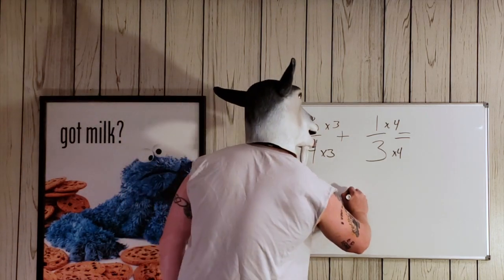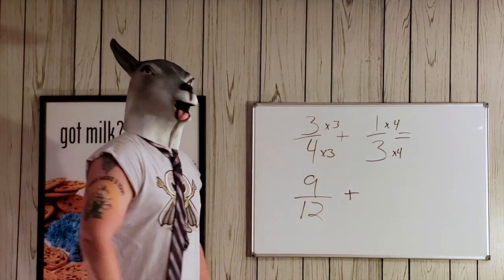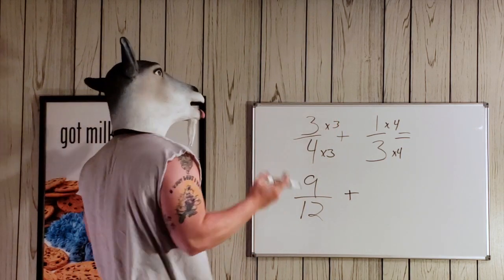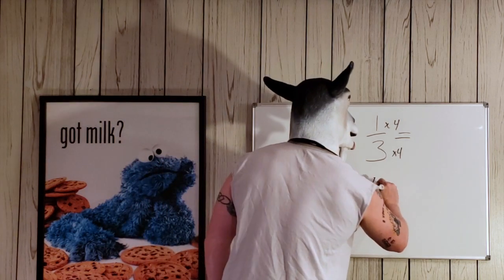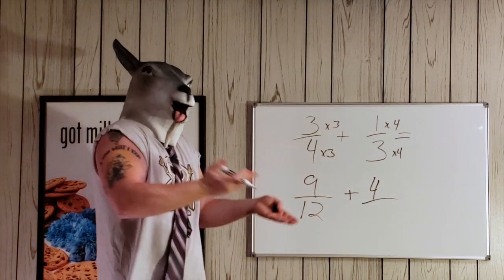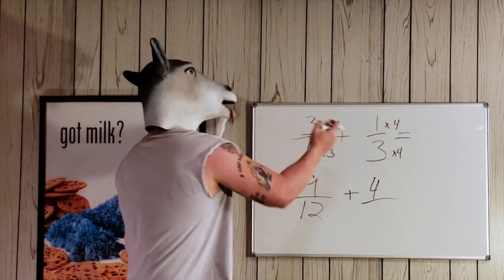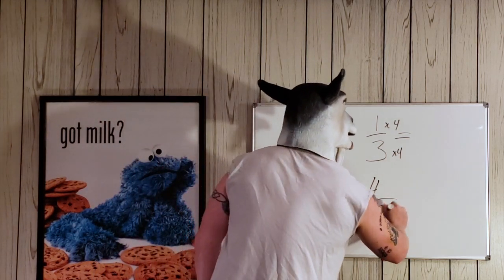Now we're just going to bring that plus sign down. And we look at the next one. So we have now is 1 times 4. 1 times 4 obviously is 4. Let's look at the bottom now. We already know, again, we just did it. 3 times 4 is 12. Boom.